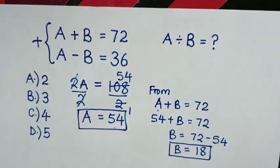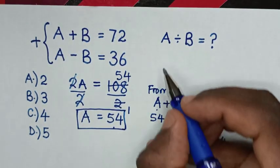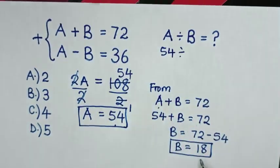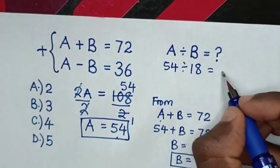But, in our problem, we have to find the value of A divided by B. So, A is 54 divided by B is 18, which will be equal to 3.